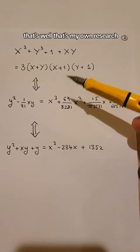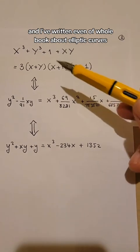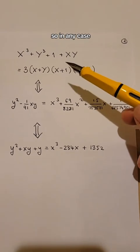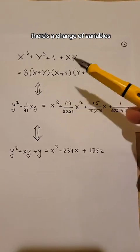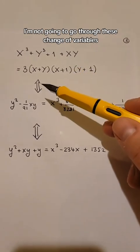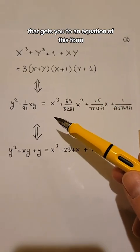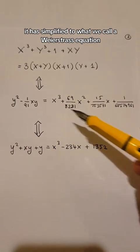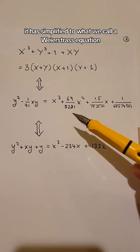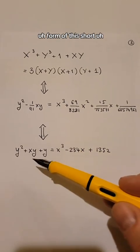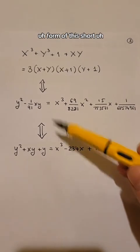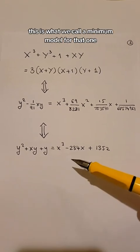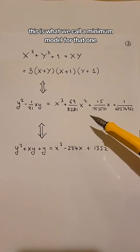That's actually my own research, and I've written even a whole book about elliptic curves. So in any case, I can go from here. There's a change of variables I'm not going to go through that gets you to an equation of this form. It has simplified to what we call a Weierstraß equation, and you can do even a simpler form of this sort with another change of variables. This is what we call a minimum model for that one.